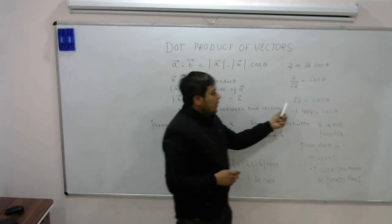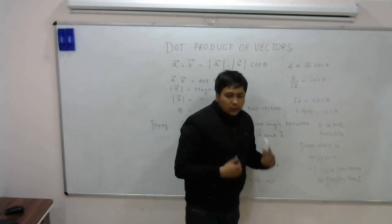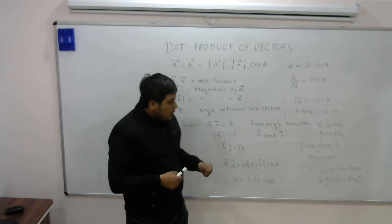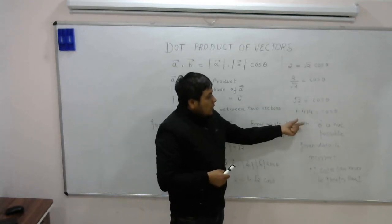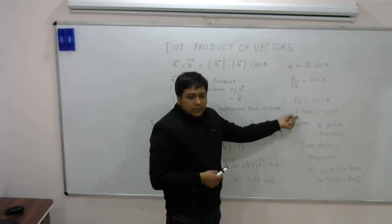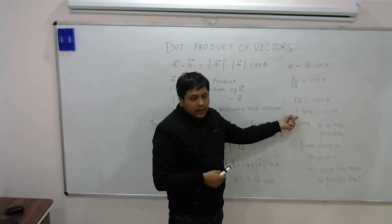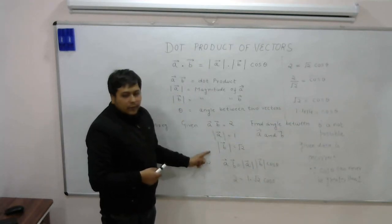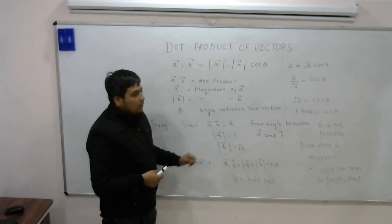If it were 1 by root 2, then theta in that case will be 45 degrees. But because root 2 is coming, that means we cannot calculate theta. That means somewhere in the given data there is a problem.